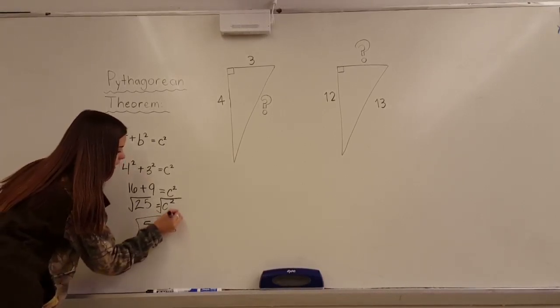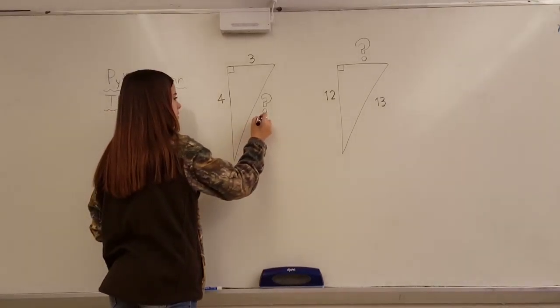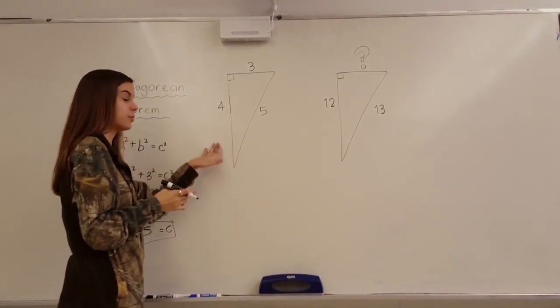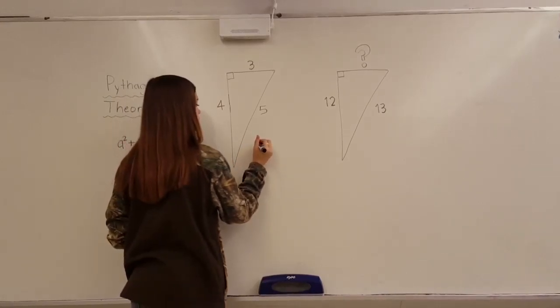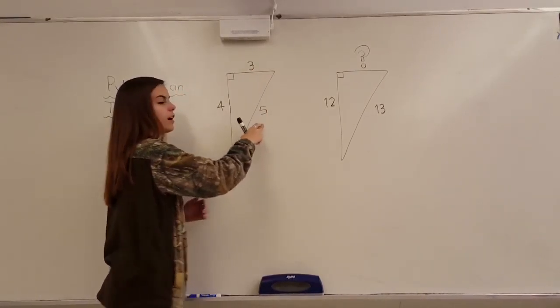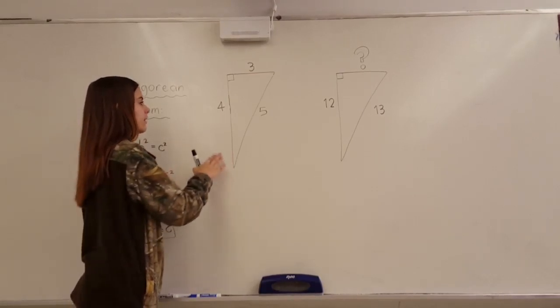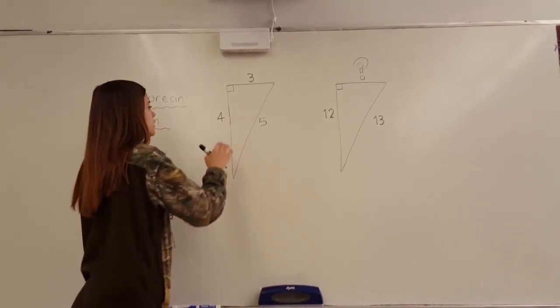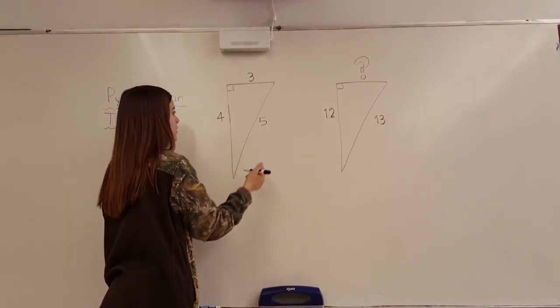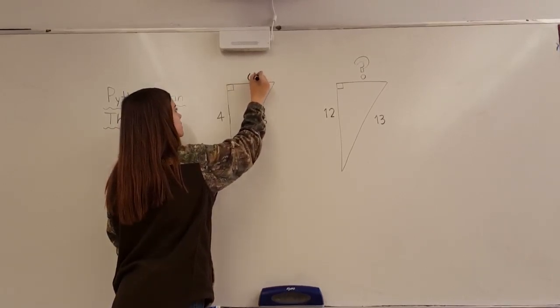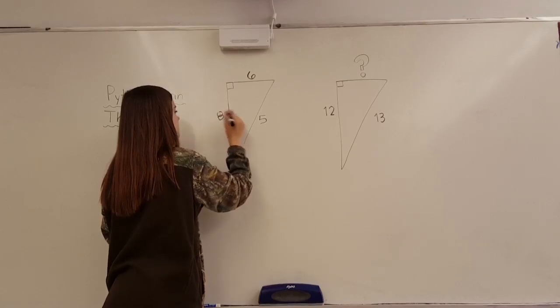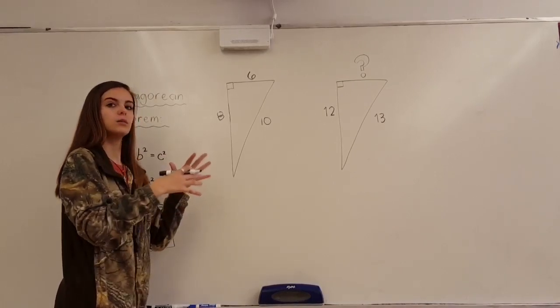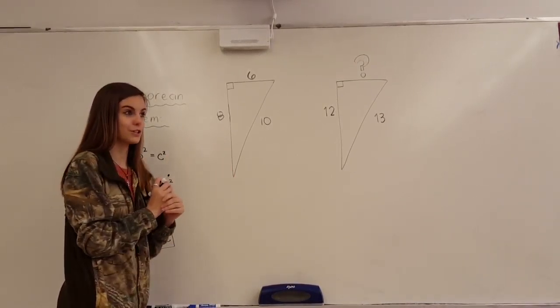So, this here is 5. Now, this is actually something that we call a triple. And there are several of them where 3, 4, 5 works out perfectly. There's no decimals or anything like that. And any multiples of these numbers will also work in place. So, if I were to do, instead of 3, 4, 5, if I did 6, 8, 10, it would also work. Because it's the same 3, 4, 5 multiplied by 2. So, that's a triple.